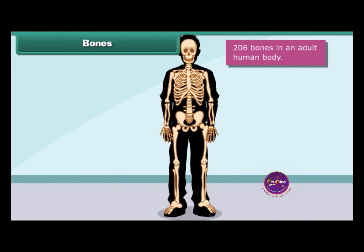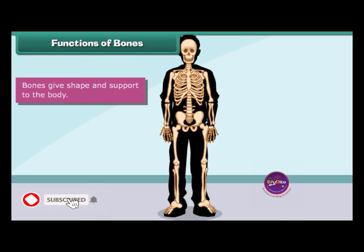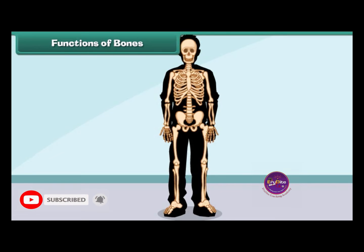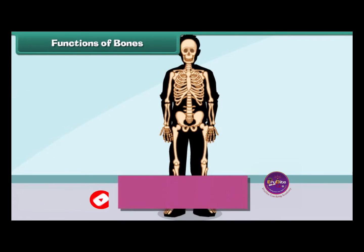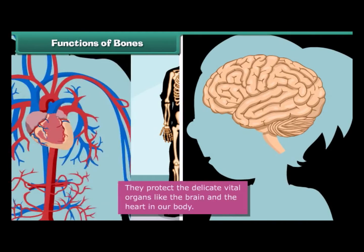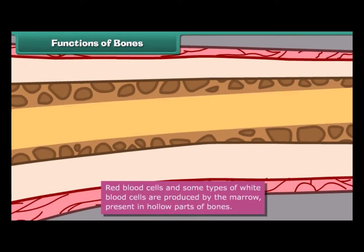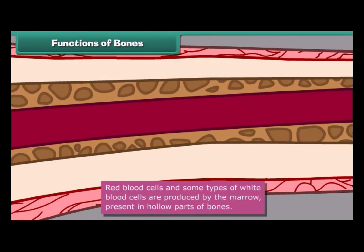What functions do bones perform? Bones give shape and support to the body. They help in body movements. They protect the delicate vital organs like the brain and the heart in our body. Red blood cells and some types of white blood cells are produced by the marrow present in the hollow parts of the bones.